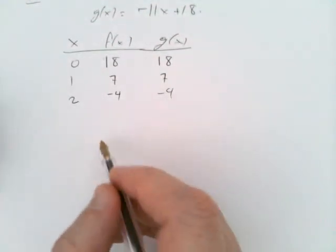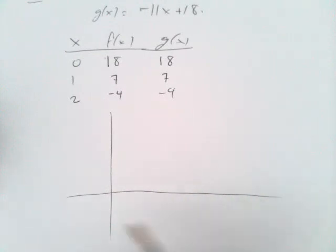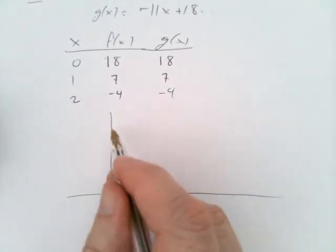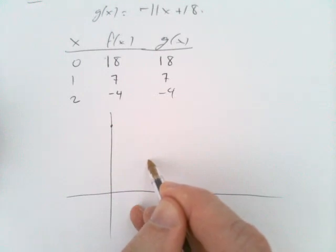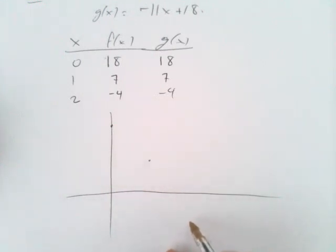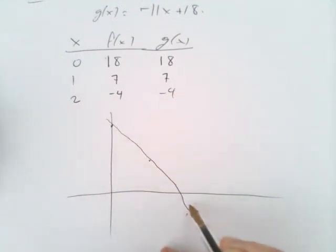Well, no. If you actually draw the graphs, they go up to 18, down to 7, and then down to minus 4. So it looks like a straight line, something like this. That's what g really looks like.